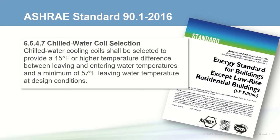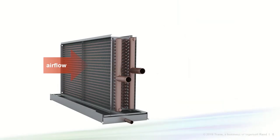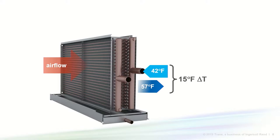Beginning in its 2016 version, ASHRAE Standard 90.1, the energy standard, now requires chilled water cooling coils to be designed for at least a 15 degree temperature difference between the leaving and entering water, and the leaving water temperature must be no colder than 57 degrees at design conditions. For example, in order for the leaving water temperature to be 57, a coil designed for 42 degree entering chilled water would comply with the minimum 15 degree delta T requirement.